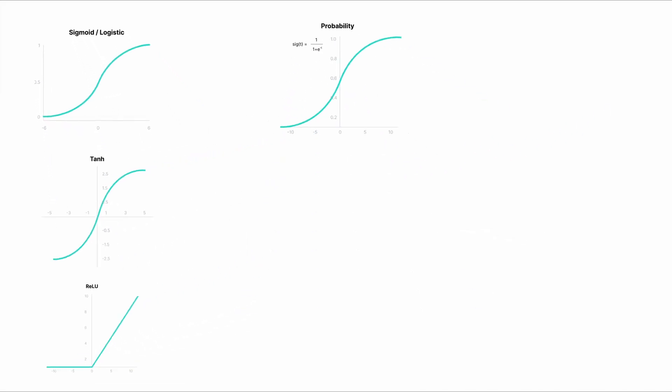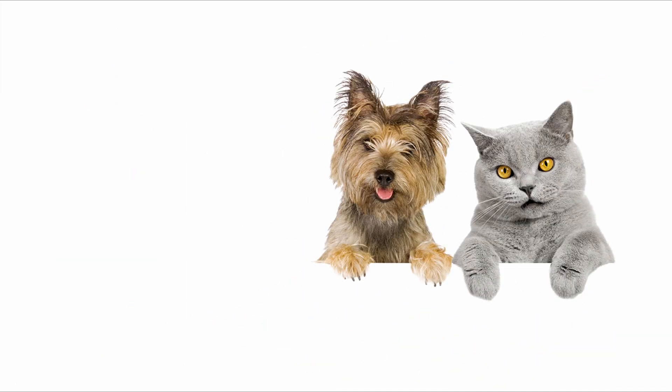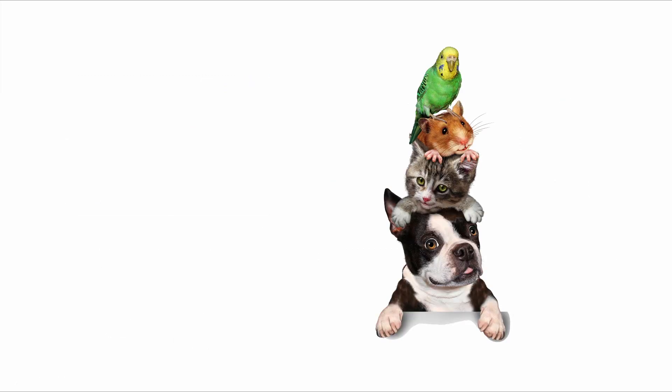Each of these and other activation functions is suitable for different use cases. For binary classification of, let's say, cats and dogs images, you'd rather use the sigmoid function. But when you have multiple types of classes to distinguish from each other, you'd better off with softmax.